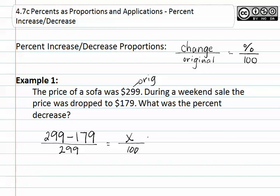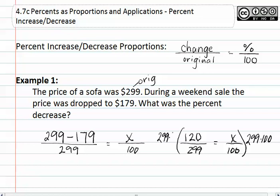We start by finding the change. We find that this is 120 over 299, which will equal x over 100. We can now multiply by the denominators to clear the denominator, which would be 299 times 100 on both sides. This allows us to clear 299 and 100, and now we have 120 times 100, which is 120,000, which equals 299x.